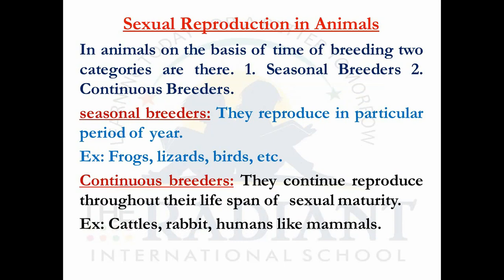In animals, on the basis of breeding time, animals are classified into two types: seasonal breeders and continuous breeders. Seasonal breeders reproduce only in a particular season — they cannot breed the whole year. Examples include fishes, lizards, birds, and frogs. Frogs and fishes normally reproduce in the monsoon season, where water is essential for reproduction. A large number of eggs are produced in water, so they are considered seasonal breeders.